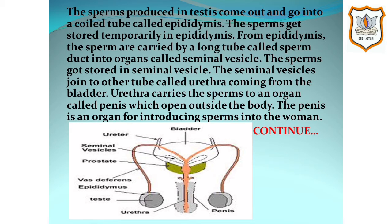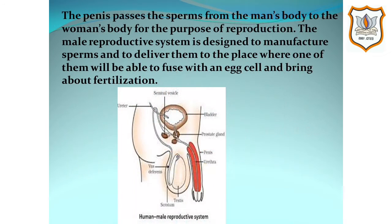The seminal vesicles join to another tube called urethra coming from the bladder, as you can see in the picture. Urethra carries the sperms into the organ called penis, which opens outside the body. These sperms are carried in liquid called semen. The penis is an organ for introducing sperms into the woman, passing them from the man's body to the woman's body for the purpose of reproduction. The male reproductive system is designed to manufacture sperms and to deliver them to the place where one of them will be able to fuse with an egg cell, that is the female gamete, and bring about fertilization.